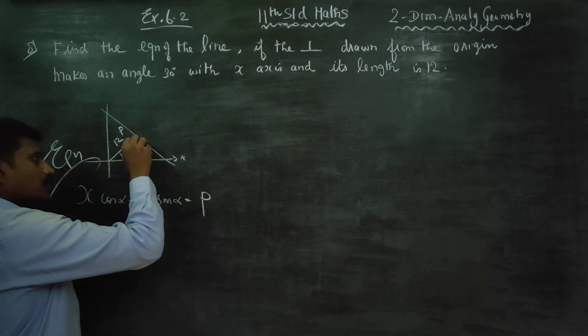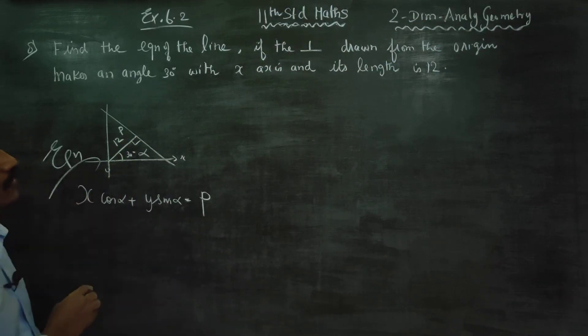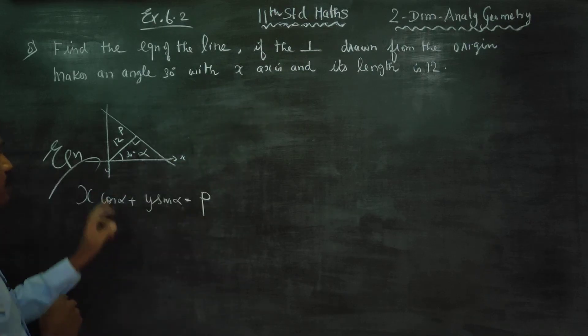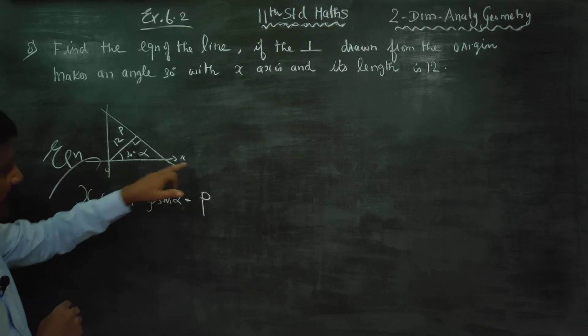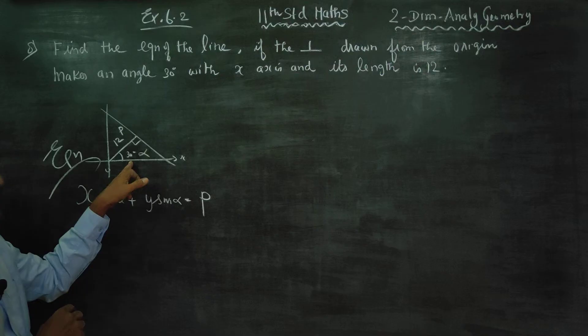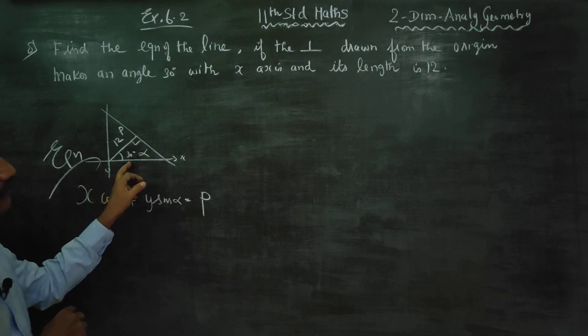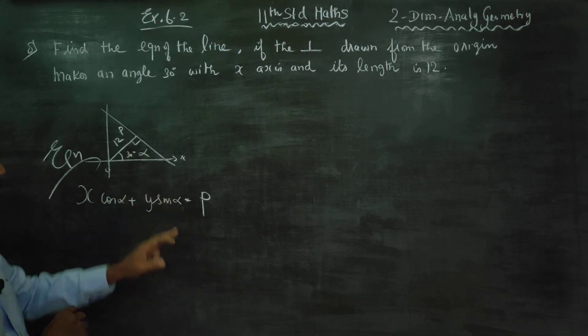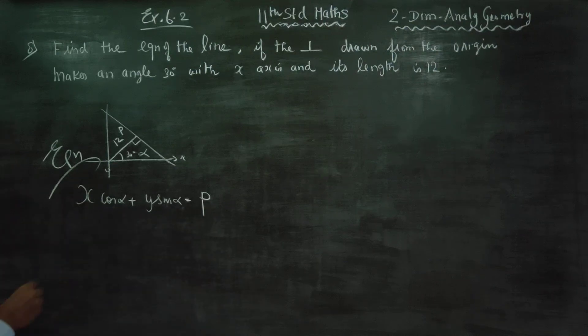Now, perpendicular distance from the origin, x-axis it must make an angle. That is 30 degree. In the ready information in which you can form the equation of a straight line: x cos alpha plus y sin alpha is equal to p.